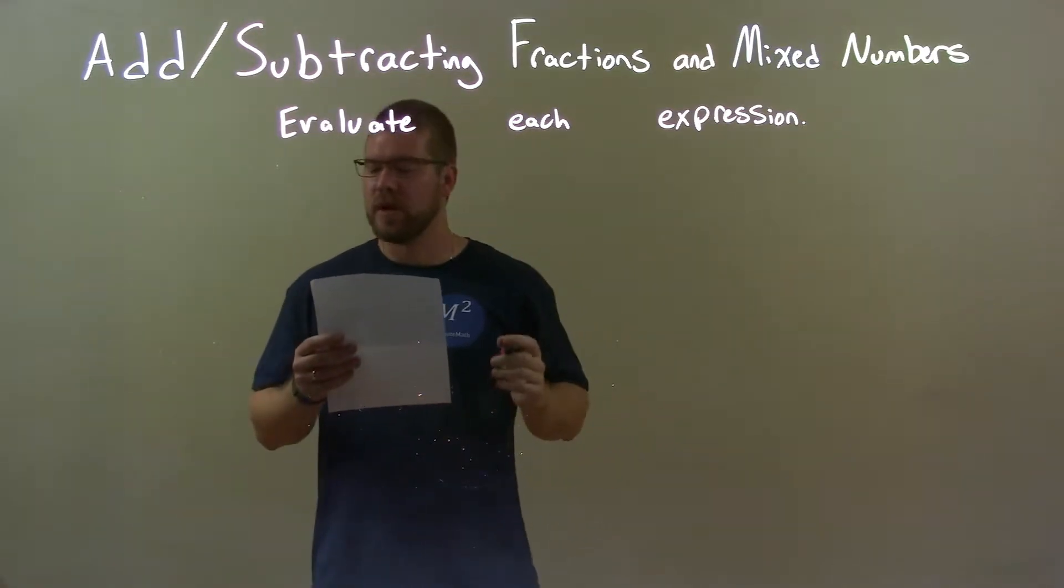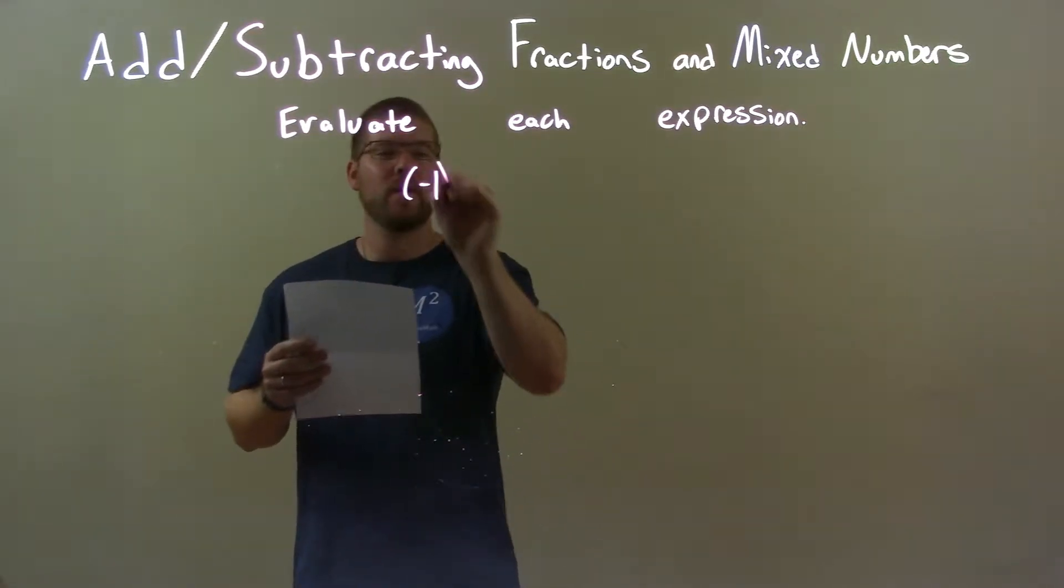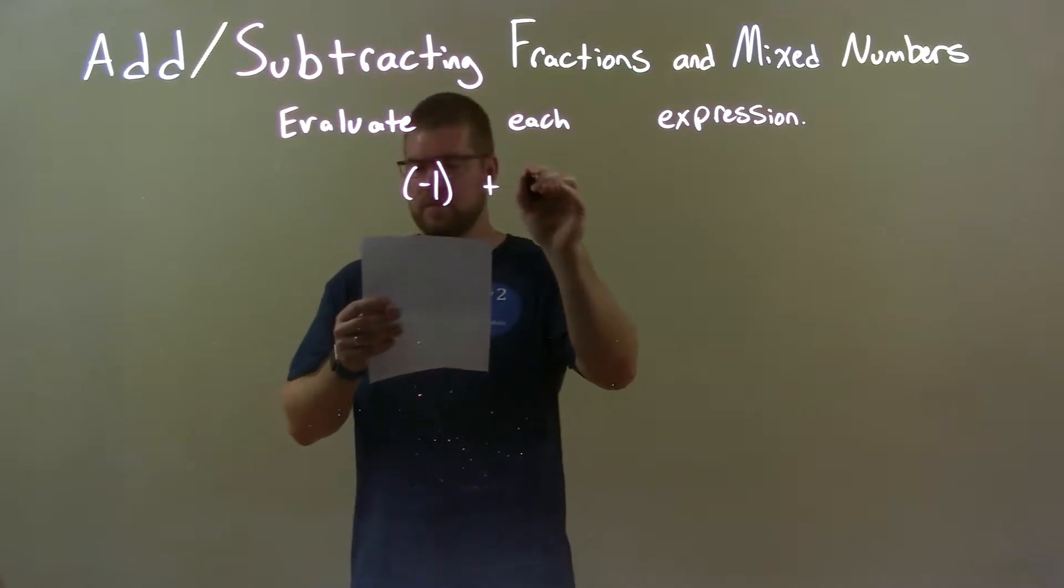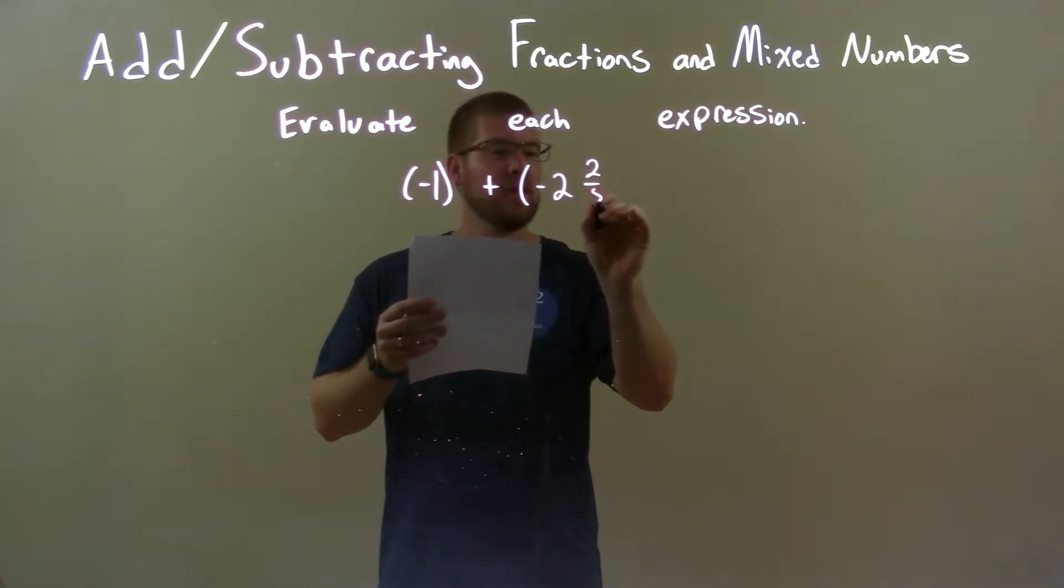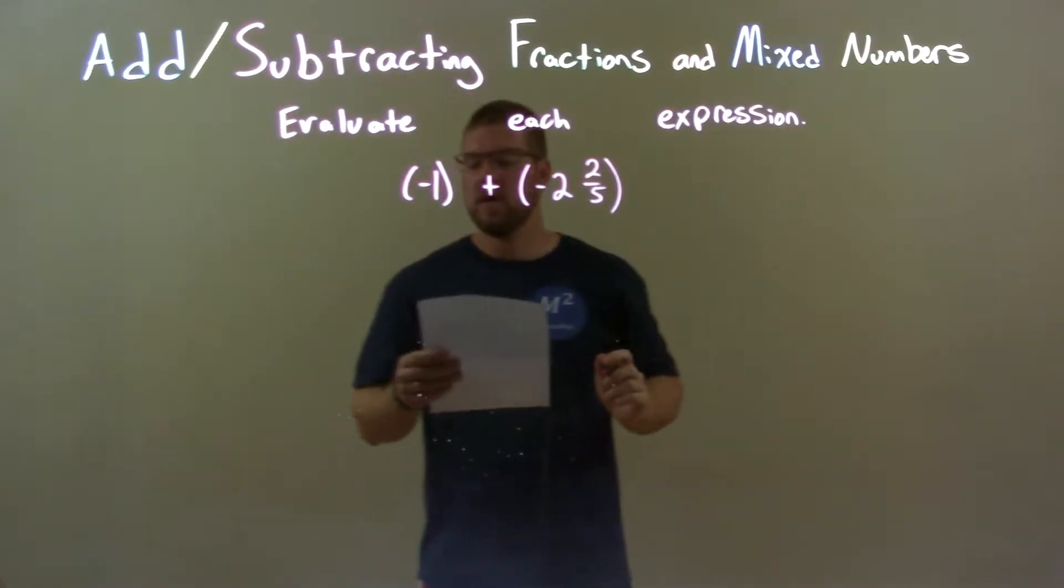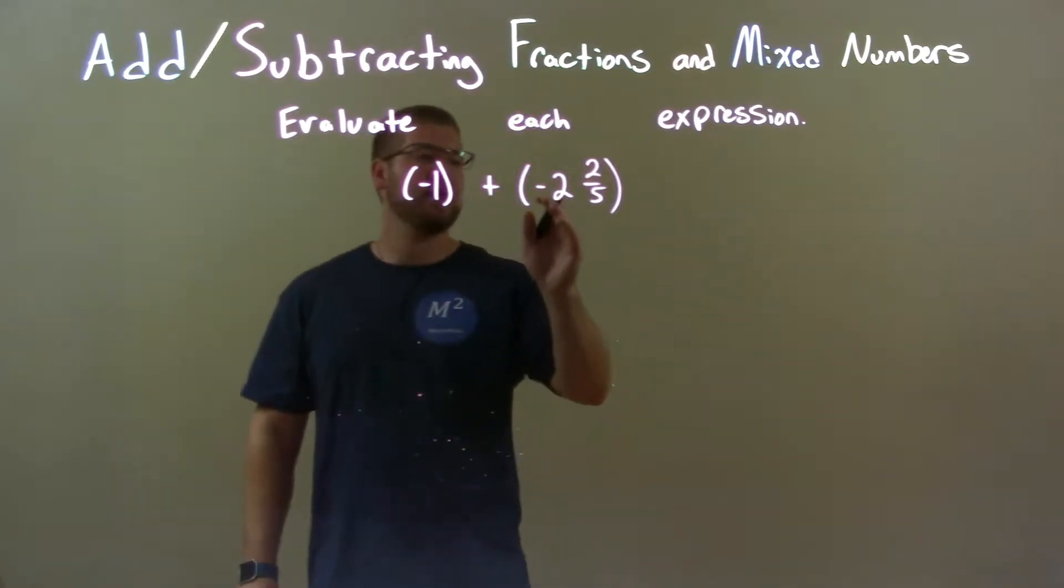So, if I was given this expression: negative 1 plus a negative 2 and 2 fifths. So, negative 1 plus a negative 2 and 2 fifths.